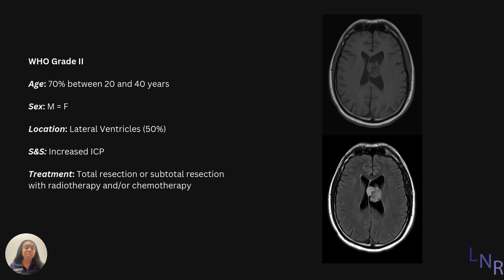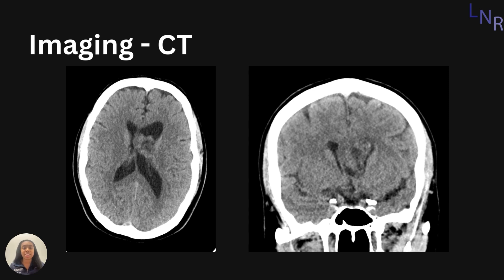Signs and symptoms include increased intracranial pressure, and treatment includes total resection or subtotal resection with radiotherapy and/or chemotherapy. In CTs, central neurocytomas can appear as isodense or hypodense. This can be seen in the transverse view of the brain, where we see a mass on the left lateral ventricle. Because of this location, central neurocytomas can obstruct the flow of cerebral spinal fluid and lead to hydrocephalus.